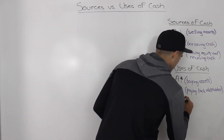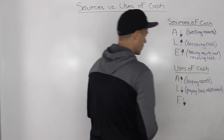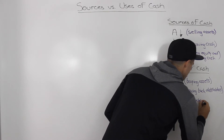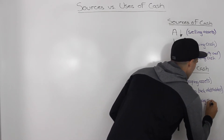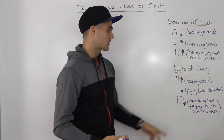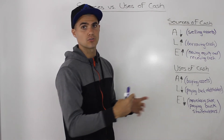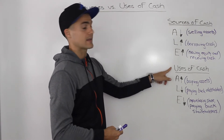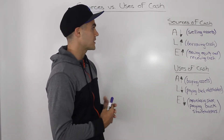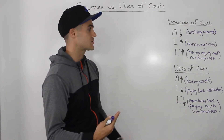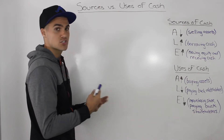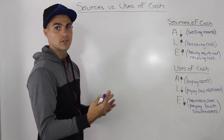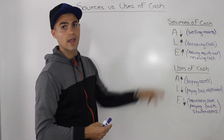For equity, when equity goes down, what's happening is you are perhaps repurchasing shares — you're basically paying back shareholders in cash. So when your equity is going down, that is a use of cash. These are the six scenarios you'll always run into. Whenever you receive a specific scenario, just check: is it an asset, liability, or equity account? Is it going up or down? And then you can tell whether it is a source or a use of cash.